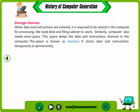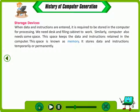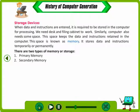When data and instructions are entered, they need to be stored in the computer for processing. Just as we need a desk and filing cabinet to work, a computer also needs some space. This space keeps data and instructions retained in the computer and is known as memory. It stores data and instructions temporarily or permanently. There are two types of memory storage: primary memory and secondary memory.